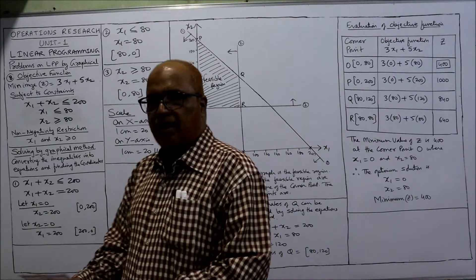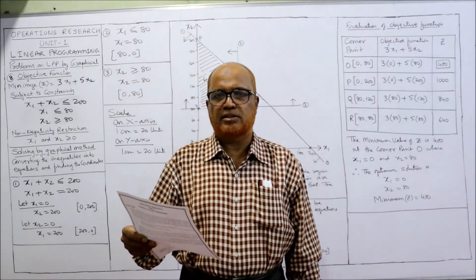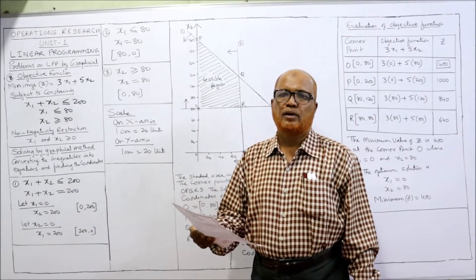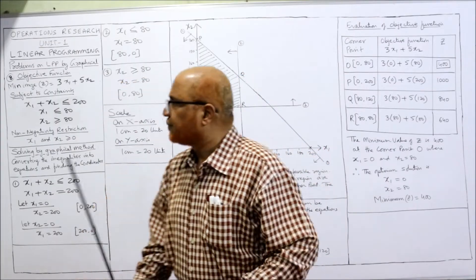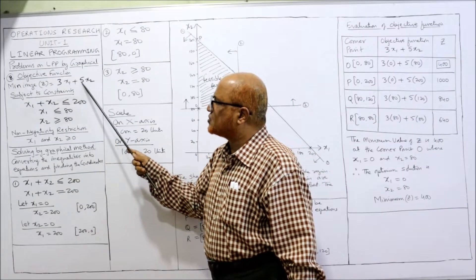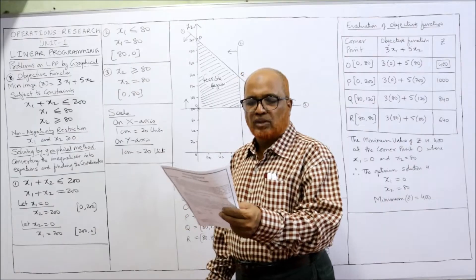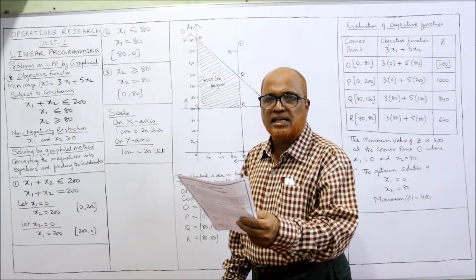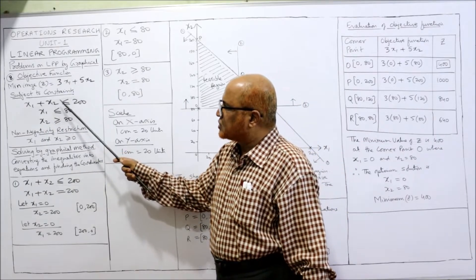Now see problem number eight: solve using graphical method. Minimize Z equals 3x1 plus 5x2. The objective function is to minimize — so minimize Z equals 3x1 plus 5x2. Subject to constraints: the first constraint is x1 plus x2 less than or equal to 200.